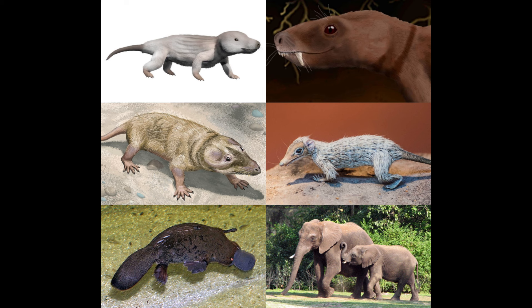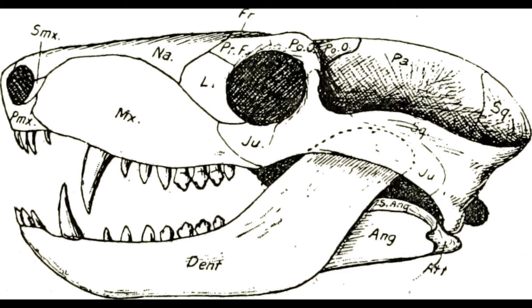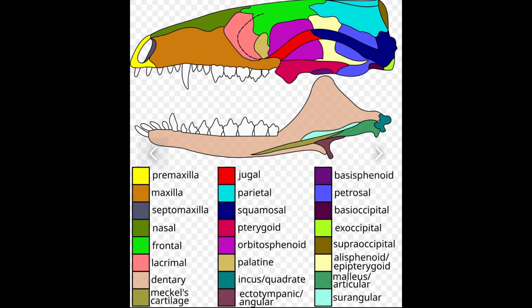Several critical evolutionary innovations set the stage for the emergence of mammals. First was differentiated teeth — one of the hallmark features of therapsids — including incisors, canines and molars. This allowed for more efficient processing of food and a more varied diet, enabling specialized feeding strategies crucial for adapting to diverse ecological niches.